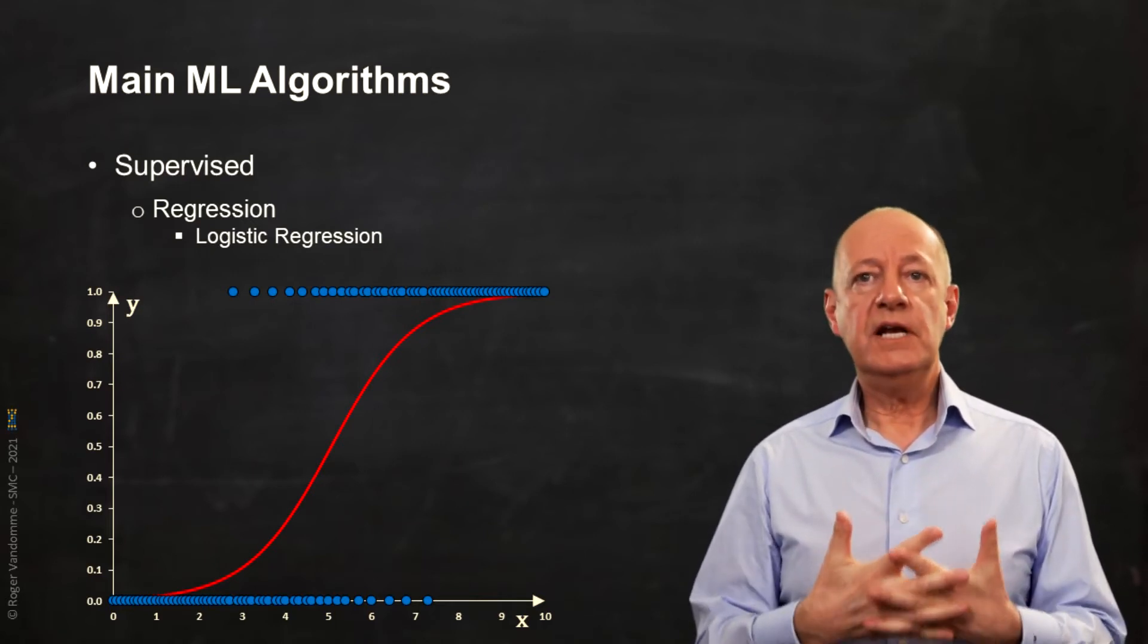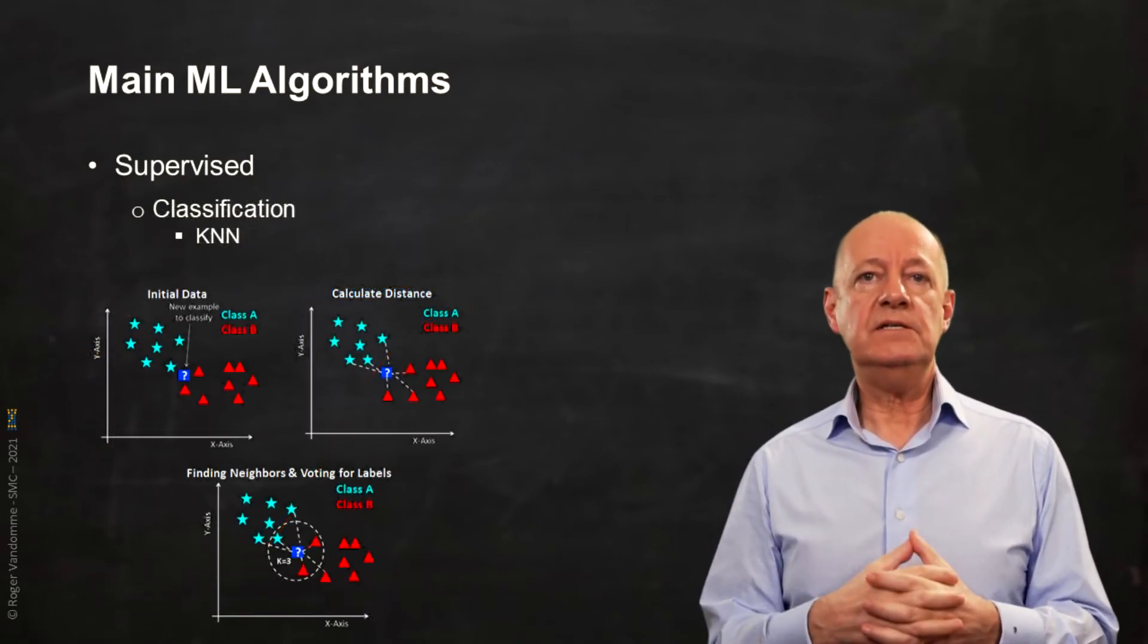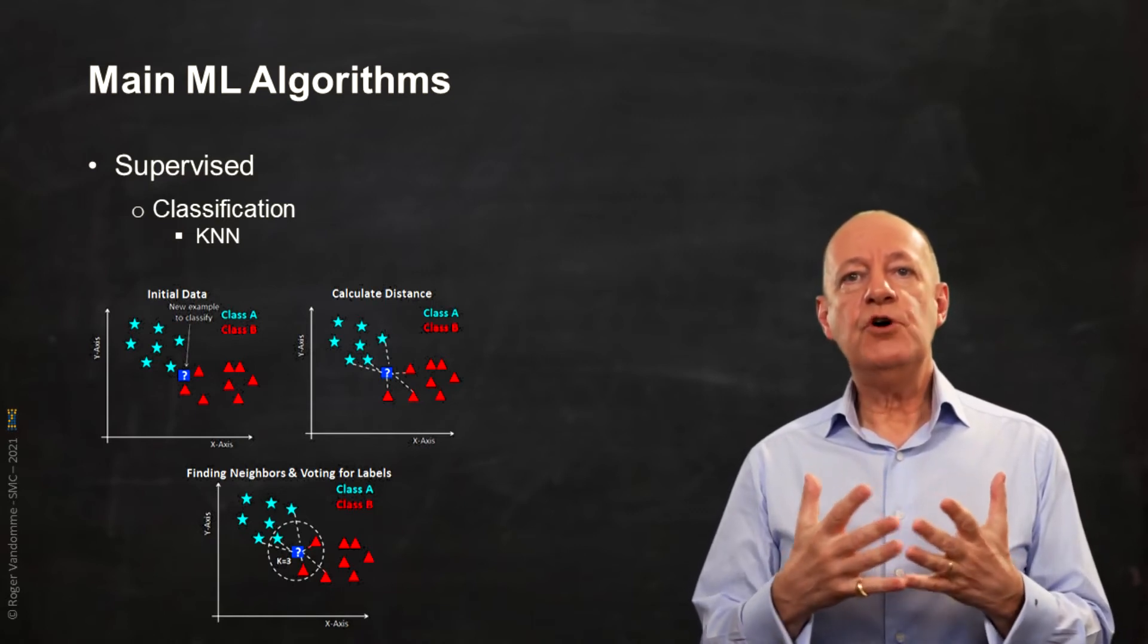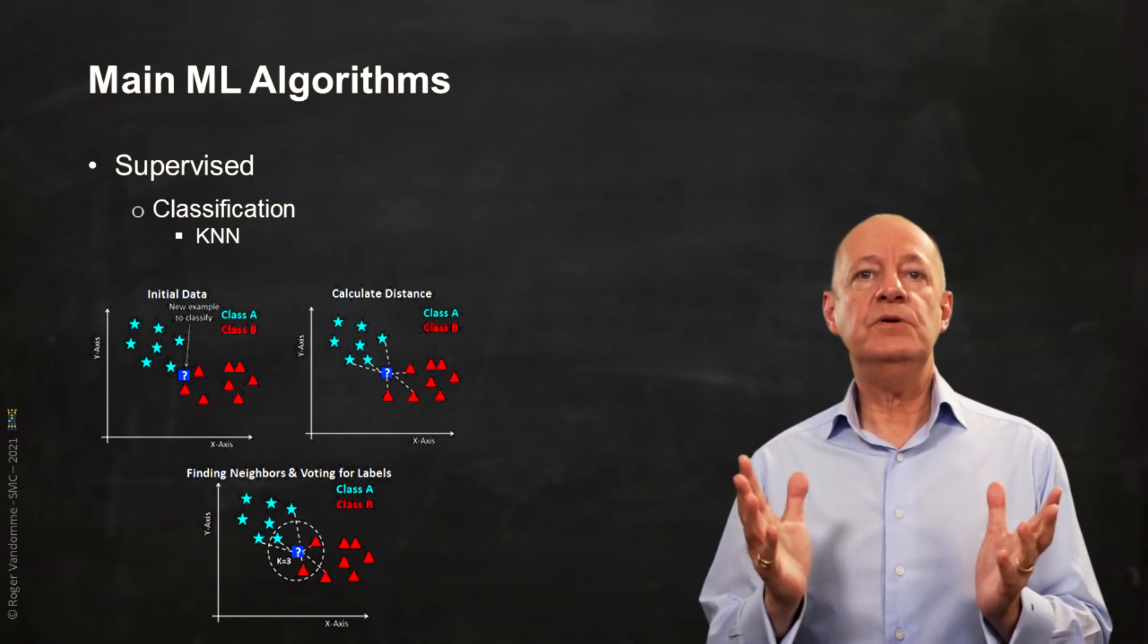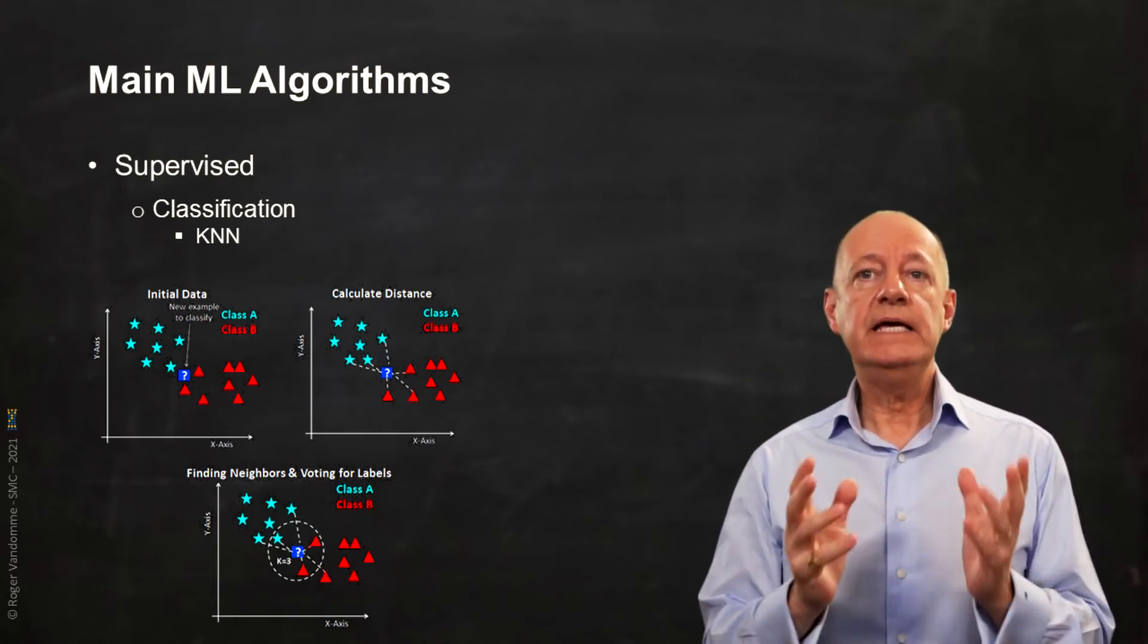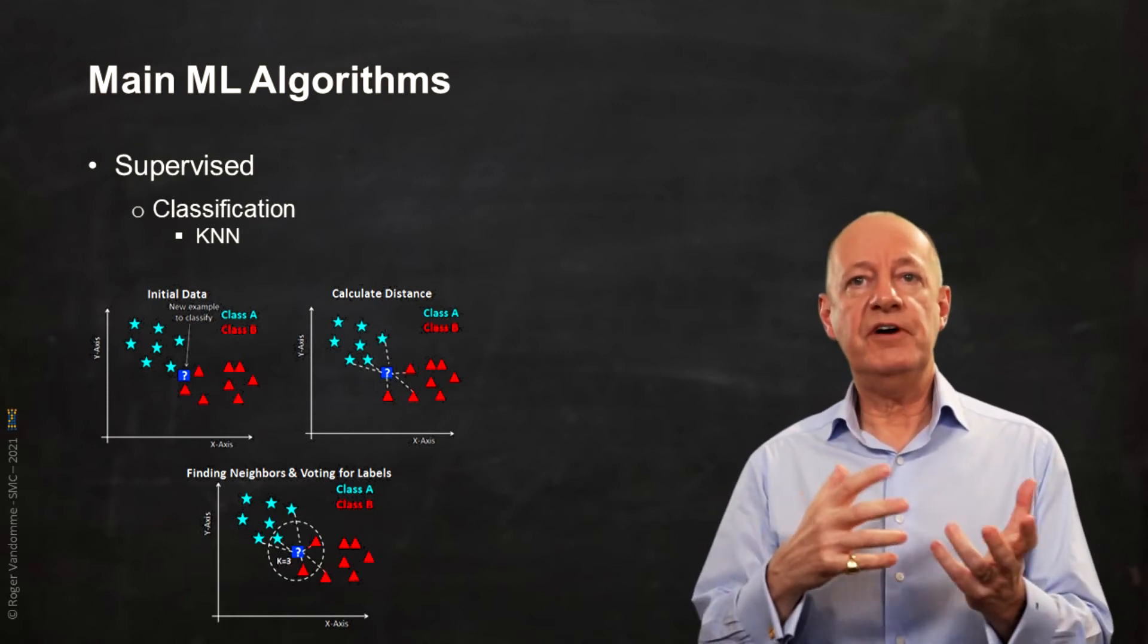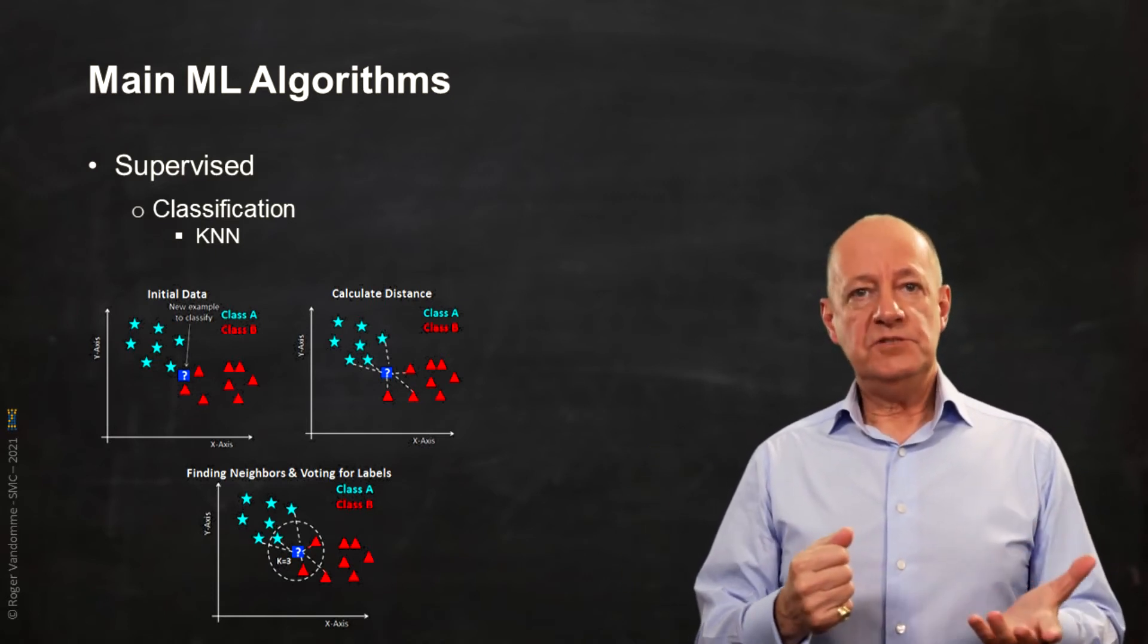In the classification category, the simplest algorithm is the KNN for K nearest neighbors. The attribution of a new observation to a class is decided according to the labels of its closest neighbors. K being a variable, we will decide if we take the 3, 4 or 5 closest neighbors.